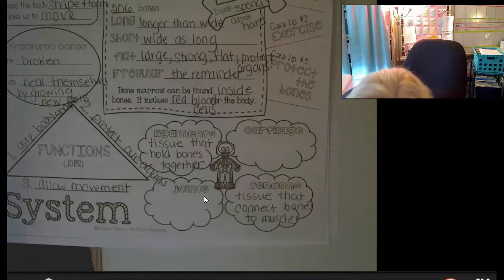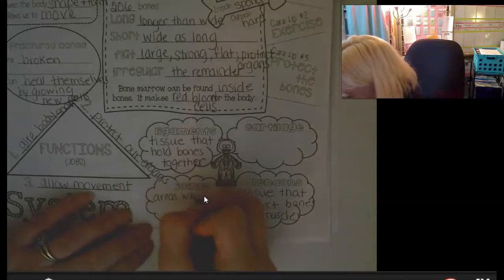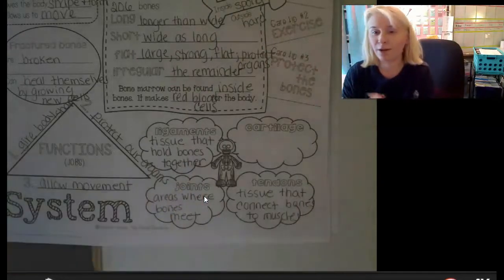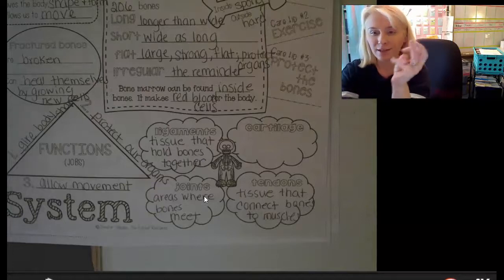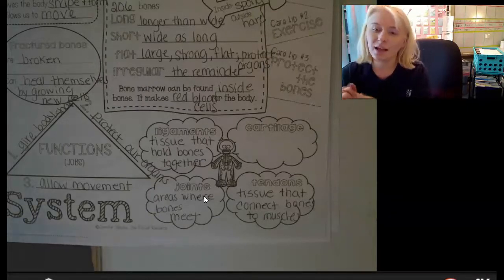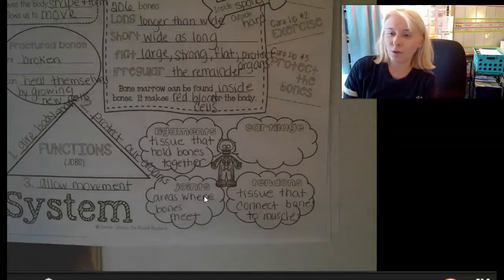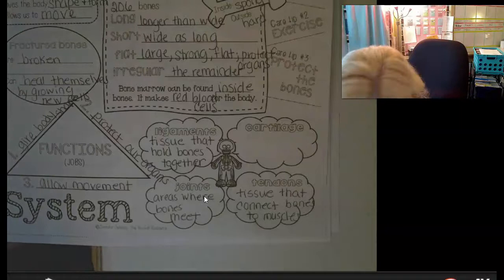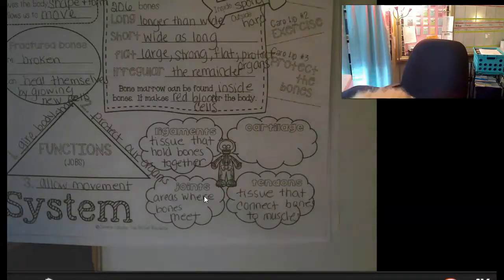Joints are areas where bones meet. We have joints in our fingers, our elbow is a joint, and we have joints where our legs bend. Cartilage is firm tissue found in the body. We have cartilage in our nose and at our earlobes — it's flexible. I recall from nursing school that there's not a lot of cartilage in the body overall.